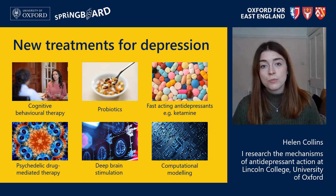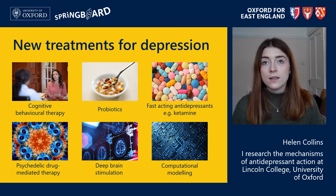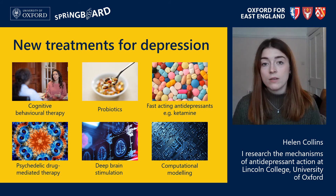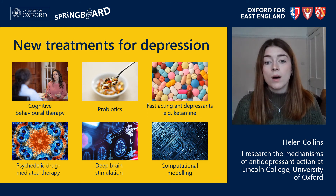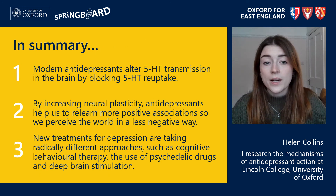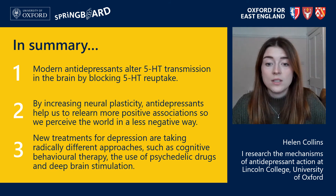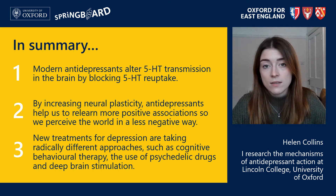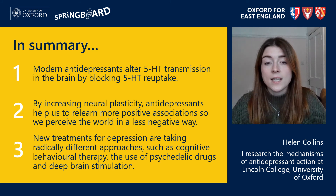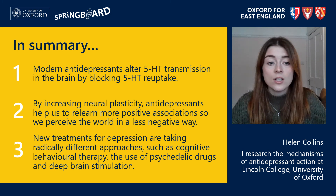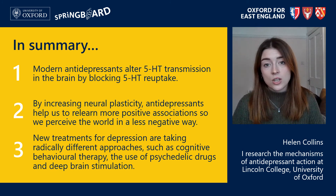Finally, scientists are trying to use computational modelling techniques to better understand which antidepressants work for different people — the idea being that if you can predict whether someone will respond to a treatment based on underlying factors about them, you're more likely to put them on the right drug sooner. In summary, today we've learned that modern antidepressants work by altering 5-HT transmission in the brain by blocking 5-HT reuptake. We've also seen that by increasing neuroplasticity, antidepressants help us to relearn more positive associations about the world, so we perceive it in a less negative way. And finally, we discussed how new treatments for depression are taking radically different approaches, such as cognitive behavioural therapy, psychedelic drugs, and deep brain stimulation.